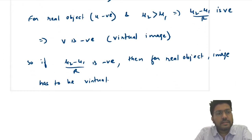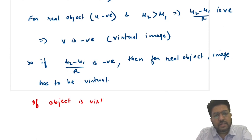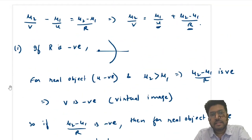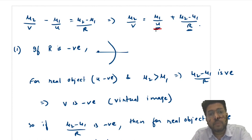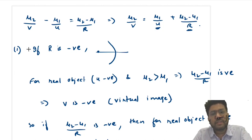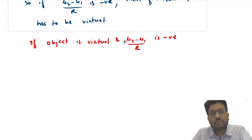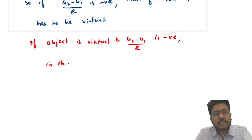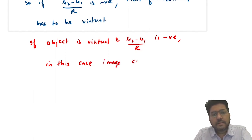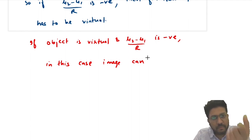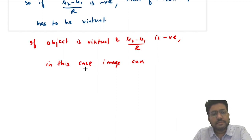If object is virtual and (μ₂ − μ₁)/R is negative: U is positive (virtual object), this term is positive, and (μ₂ − μ₁)/R is negative. Positive plus negative can be positive or negative, so the image can be real or virtual depending on which term is larger.